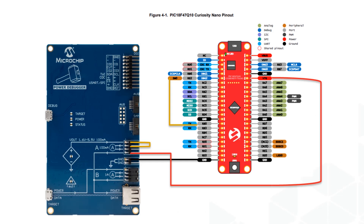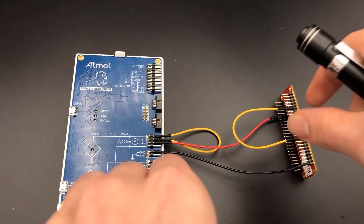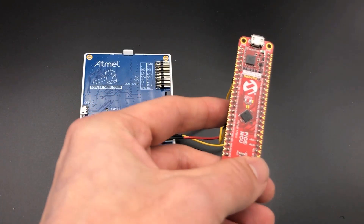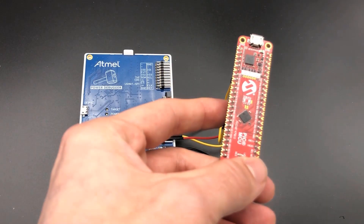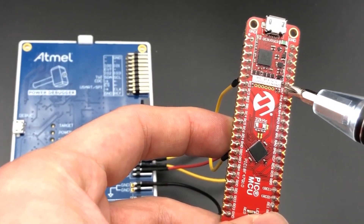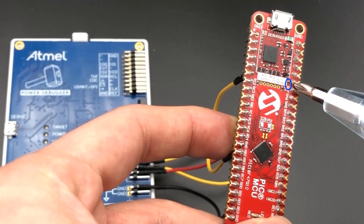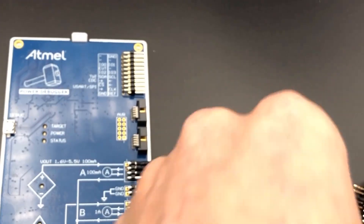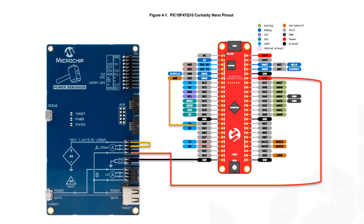I have my hardware configured to allow the Power Debugger to function as both a power supply and an ammeter. One important thing to note is that the target voltage connection (VTG strap) on the board needs to be cut to ensure that we aren't including the power consumption of the debugger in our measurements. Once hardware is set up, connect both the Power Debugger and the Curiosity Nano to your computer's USB port.